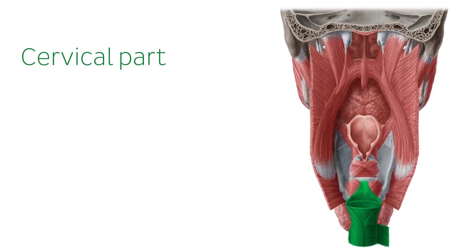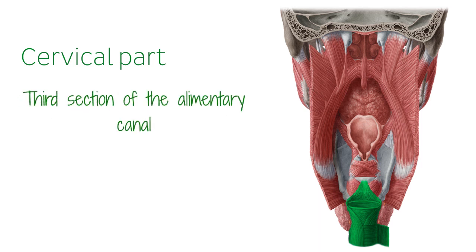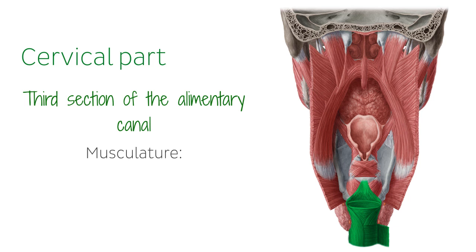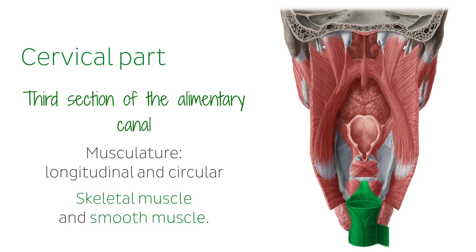The esophagus is the third section of the alimentary canal after the oral cavity and the pharynx. The cervical part of the esophagus is situated in front of the cervical part of the vertebral column. The overall musculature of the esophagus runs both longitudinally and circularly for about 22 cm, utilizing both skeletal muscle on the superior third and smooth muscle on the inferior two-thirds.